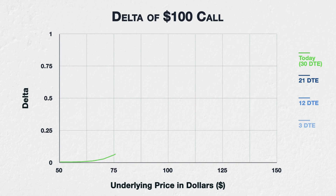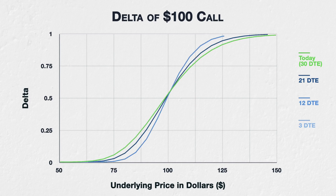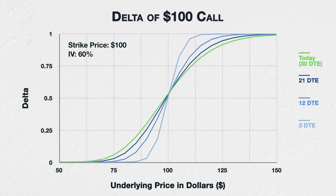Let's take a look at the $100 call option again, this time with a fixed 60% implied volatility. We'll look at the same 30 days to expiry initially, in green labelled as today, but then let's see how deltas change as time passes, or as days to expiry decreases.